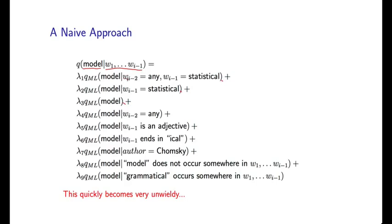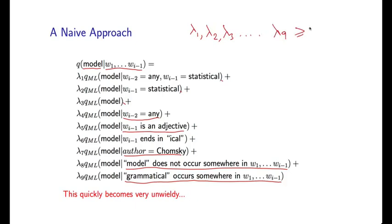I could take these nine different maximum likelihood estimates that I've shown you here. Here I have the regular trigram, bigram, unigram estimate. Here I condition on the word two-back being any. I condition on the last word being an adjective. I condition on the author, the presence or absence of model in the context, the presence or absence of grammatical in the context. I take all of these estimates and I simply take a linear interpolation of these estimates. I have now parameters, smoothing parameters lambda 1, lambda 2, lambda 3, up to lambda 9. And these are all greater than or equal to 0 and they sum to 1.